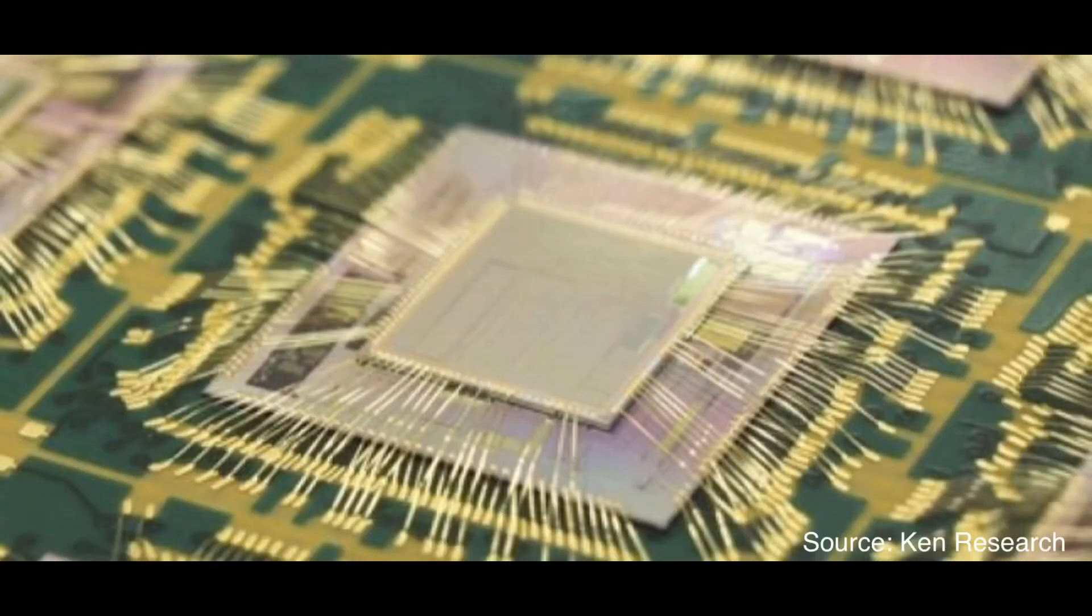Wire bonding connects the die and package substrate with wire. It creates bridges for data from the die to the electronic product and makes it operate.